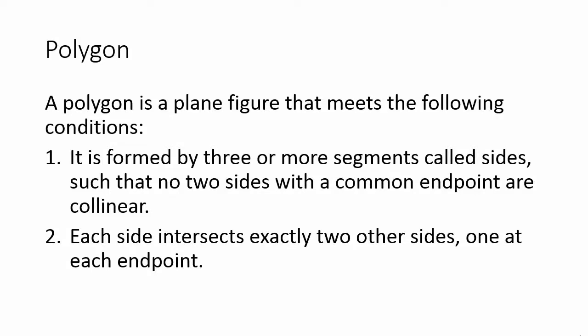We start with some definitions. The first word is polygon. A polygon is a plane figure that meets the following conditions: it is formed by three or more segments called sides, such that no two sides with a common endpoint are collinear, and each side intersects exactly two other sides, one at each endpoint.